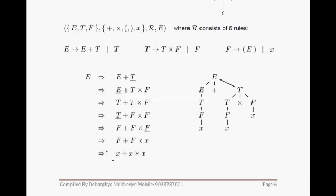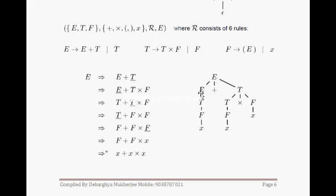Here is another example where we want to generate the string x + x * x using arithmetic grammar rules. We start with e → e + t. Then t is replaced by t * f. The e is replaced by t, giving us t + t * f. That t is replaced by f, and finally each f is replaced by x, giving us x + x * x. This derivation can also be represented as a parse tree, where e is the root, e → e + t, then t → t * f, then each terminal resolves to x.